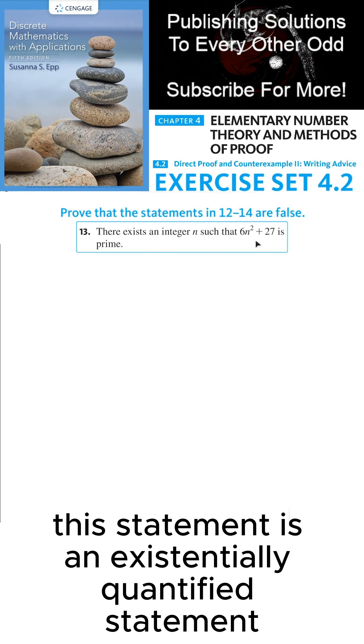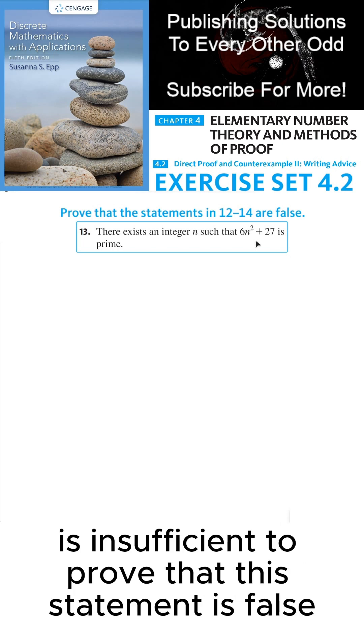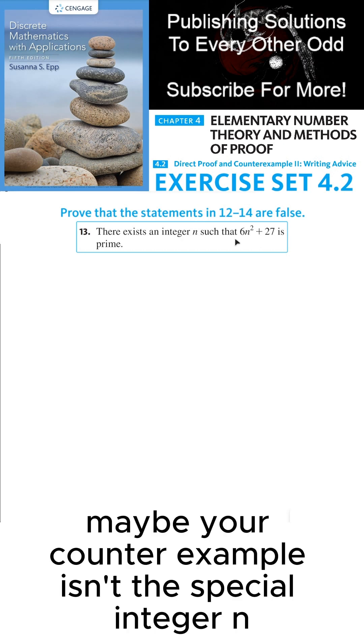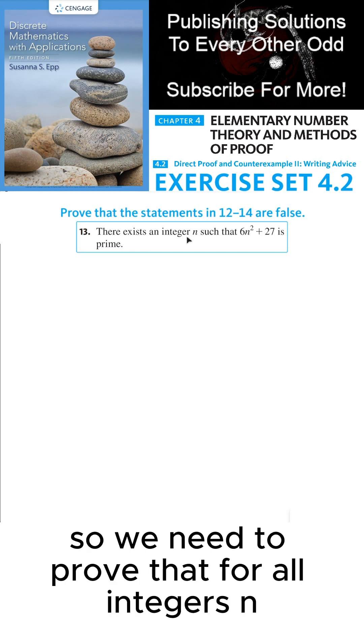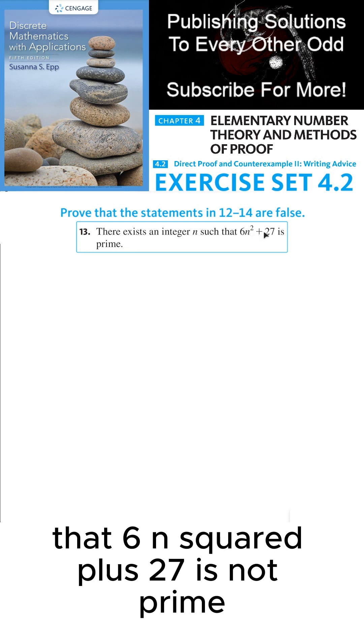Now this statement is an existentially quantified statement, meaning that finding a counterexample is insufficient to prove that this statement is false. Maybe your counterexample isn't the special integer n that we were looking for. So we need to prove that for all integers n that 6n squared plus 27 is not prime.